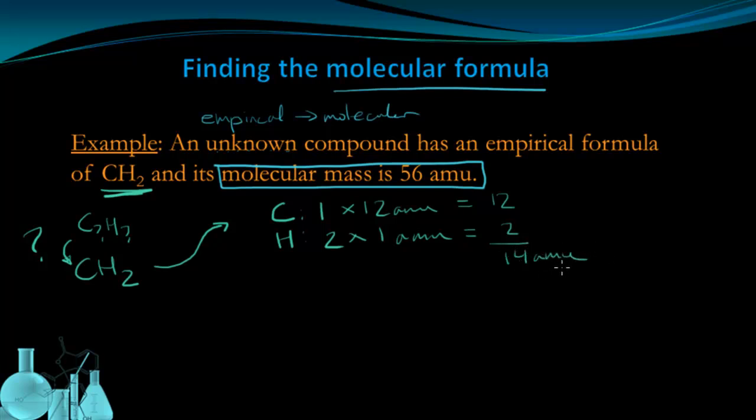I can refer to 14 AMUs as the empirical mass, or the empirical formula mass. Now remember, I know the molecular mass is 56 AMUs. So I'm going to find a ratio of the molecular mass to the empirical mass.